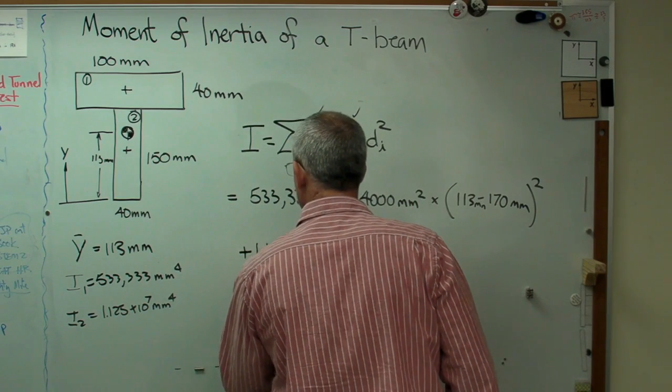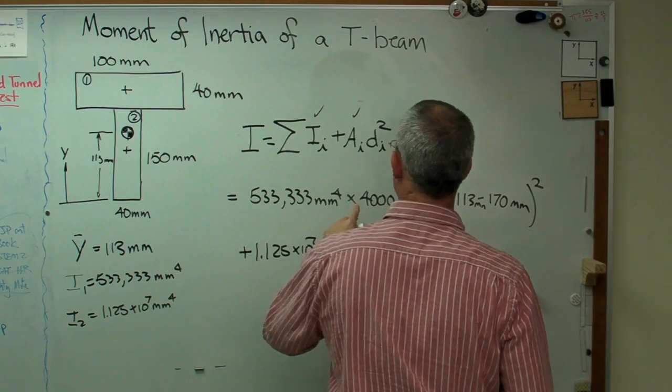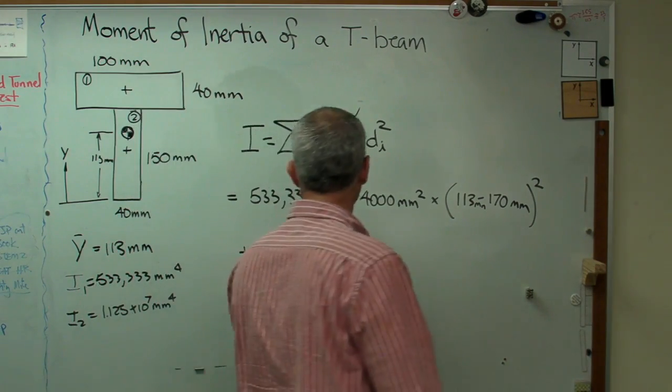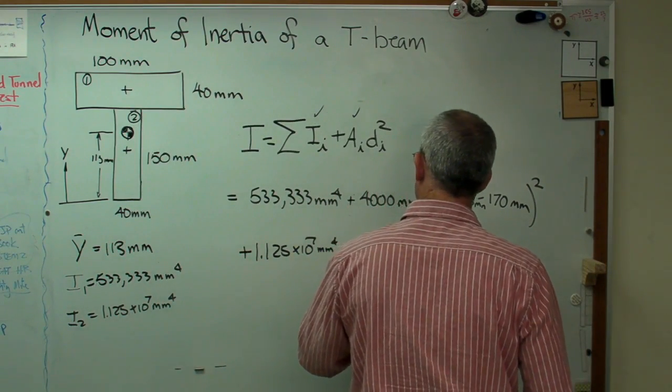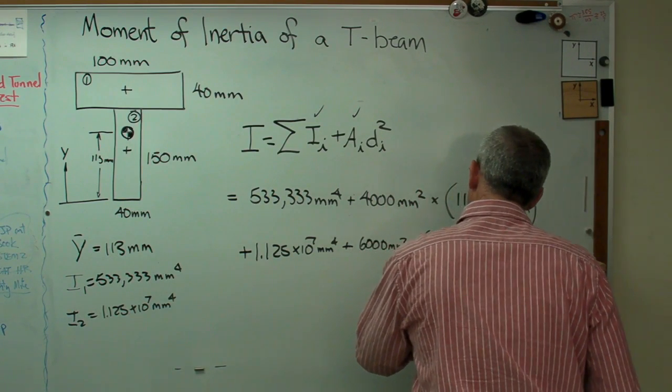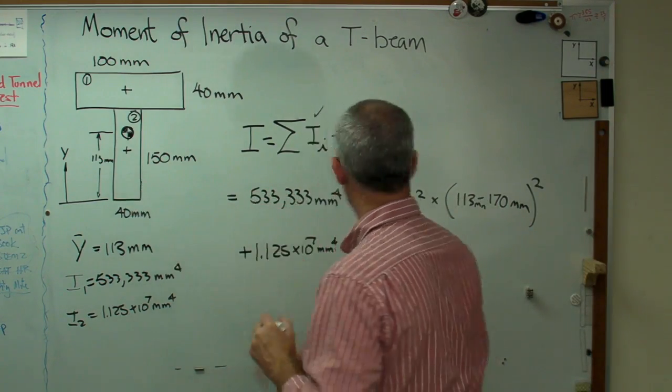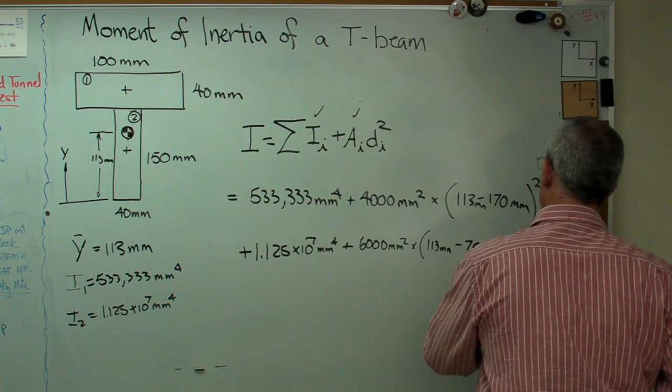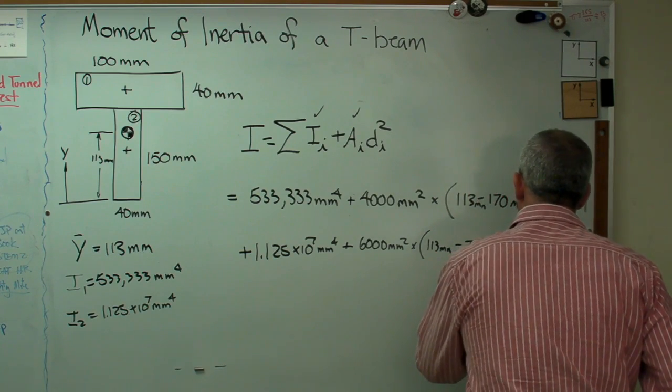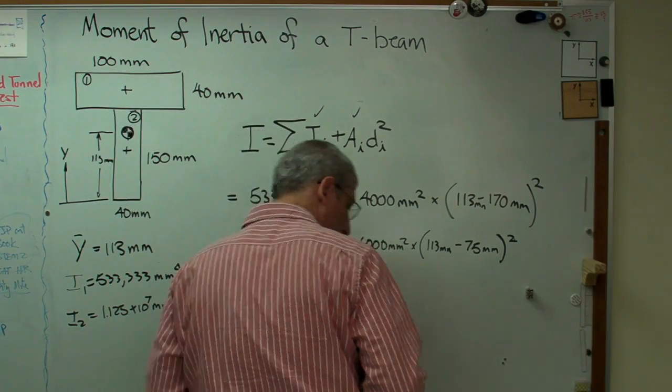Box two, 1.125 times 10 to the seventh plus 6,000 millimeters squared times 113 millimeters minus, now I'm going to subtract 75 from that one. That's actually going to be a positive number now. So there we go. Those are my two terms.